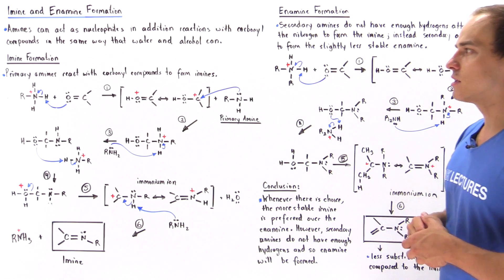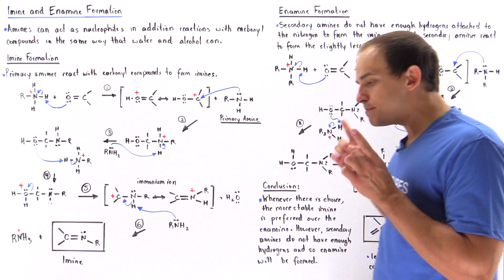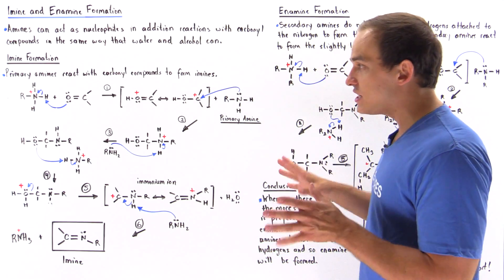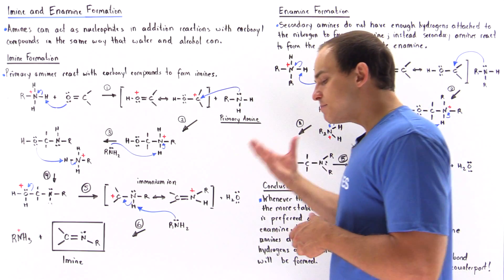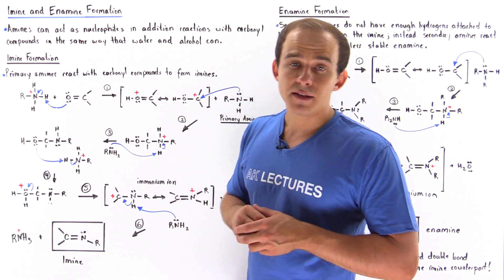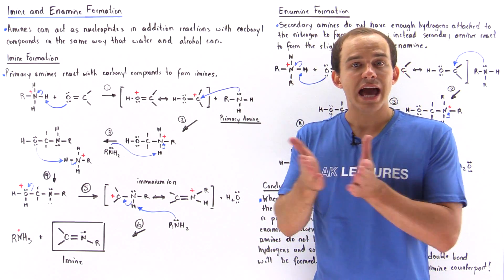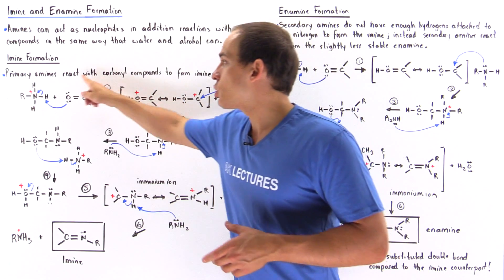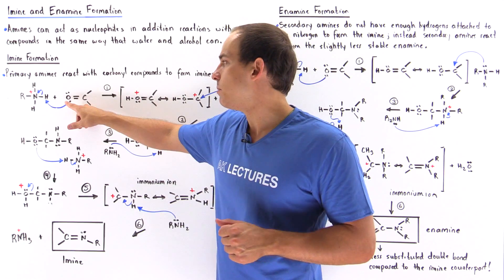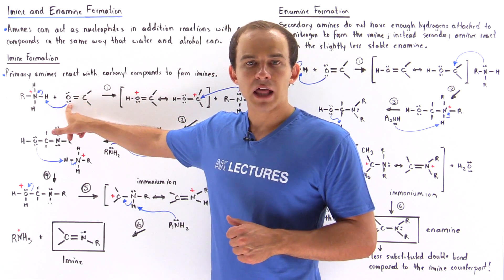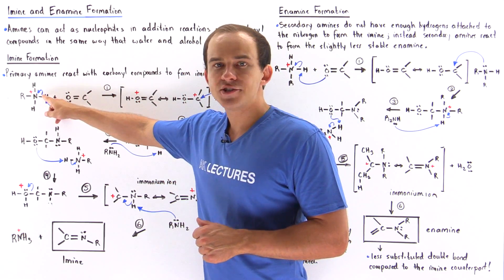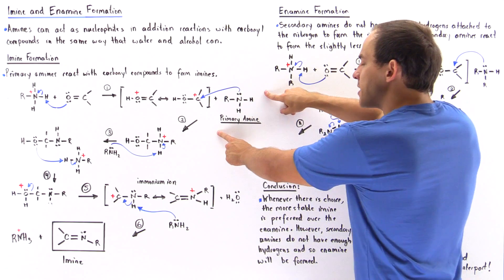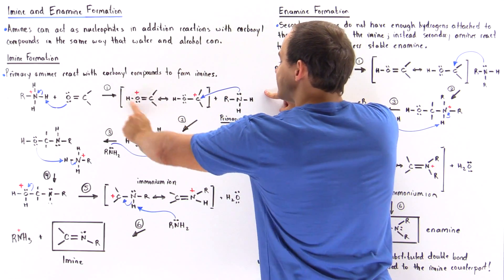Primary amines react with carbonyl compounds to form imines. This takes place because our primary amine has two H atoms attached to the nitrogen atom — we'll see why that's important in just a moment. This is essentially an acid-catalyzed reaction, meaning in the first step we have an acid — the conjugate acid of our primary amine — that reacts with the carbonyl molecule. The carbonyl molecule is protonated on the oxygen end of the double bond.